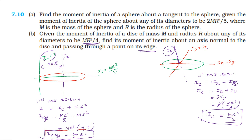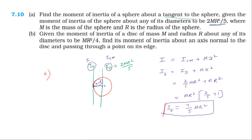In summary, for the first problem we used the parallel axis theorem to get I_tangent = 7mr²/5, and for the second problem we used both the perpendicular axis theorem and the parallel axis theorem to get I_edge = 3mr²/2.